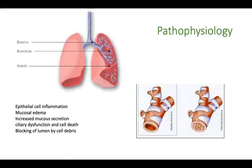Bronchiolitis is a lower respiratory tract infection where the smaller bronchioles are involved. It is an airway disease, just like asthma, but here the site of involvement is the bronchioles. The pathology involves epithelial cell inflammation leading to mucosal edema, increased mucosecretion, ciliary dysfunction, cell death, and blocking of the lumen by cell debris.